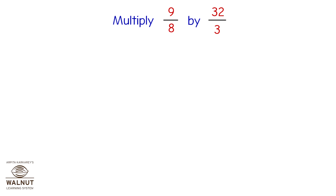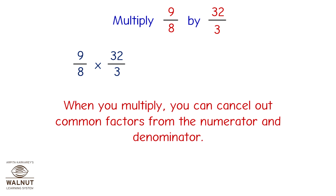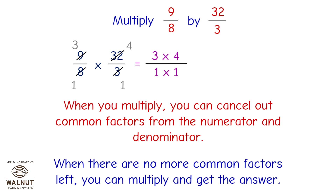Multiply 9/8 by 32/3. That is 9/8 × 32/3. When you multiply, you can cancel out common factors from the numerator and denominator. That gives 3×4 / 1×1. When there are no more common factors left, multiply to get the answer: 12/1 = 12.